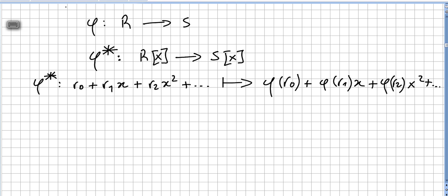So if there is this ring homomorphism, there will also be a polynomial ring homomorphism.